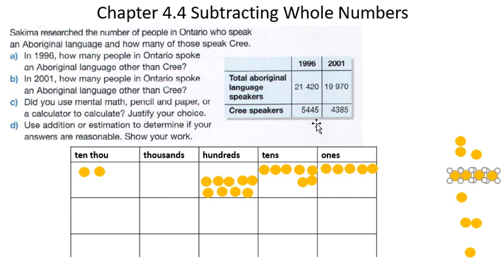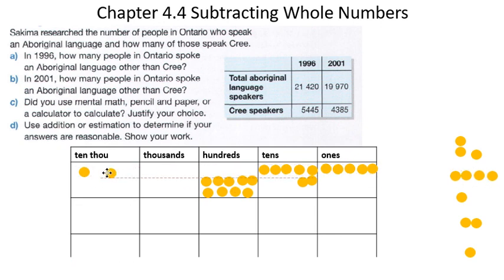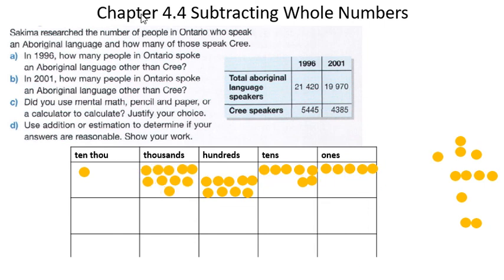Now I must remove five one-thousands from here. I don't have that, so I'm going to take my one ten-thousand, move it over to my thousands, and regroup it into ten thousands. Let's do that. So I've regrouped it — I've moved one of the ten-thousands over here, which makes ten one-thousands.